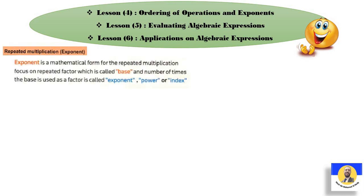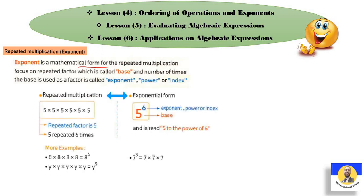أول حاجة هنبدأ نتكلم فيها في Lessons 4, 5, 6 هي Repeated Multiplication. Repeated Multiplication دي معنى عندنا اسمها Exponent. يعني Exponent is a mathematical form for the Repeated Multiplication. Focus on the Repeated Factor which is called Base. And the number of times the base is used as a factor is called Exponent, Power, or Index.